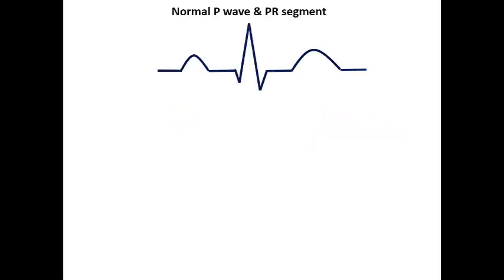Let's look at this ECG. This shows the normal P wave, isoelectric PR segment, isoelectric ST segment, normal QRS complex, and normal T wave. When we say isoelectric, we compare it to the TP segment as our baseline.